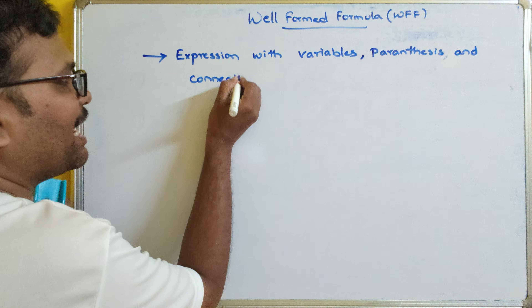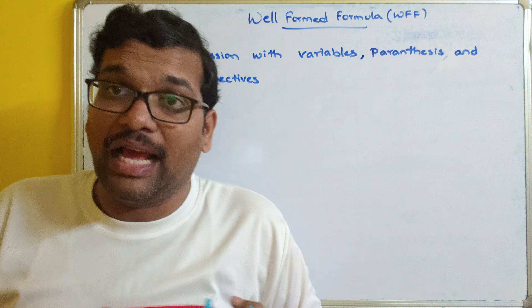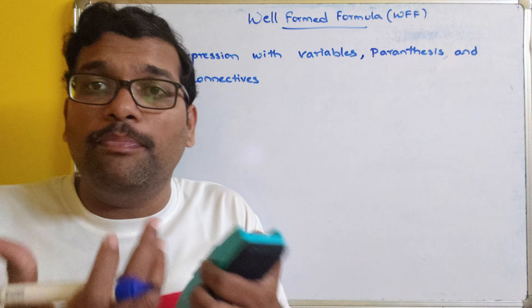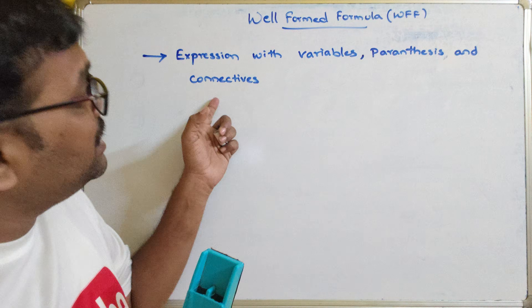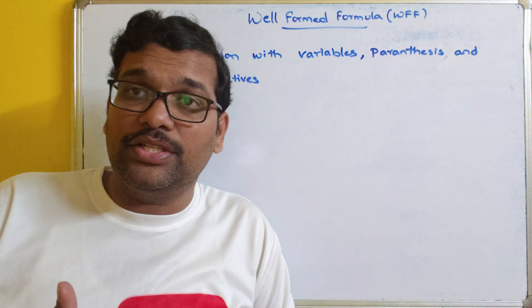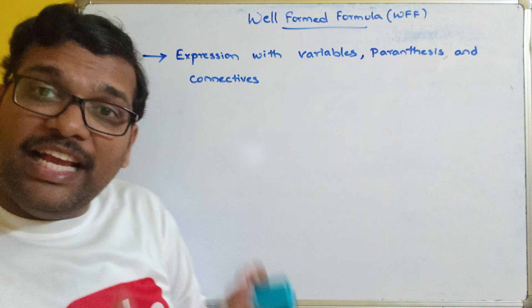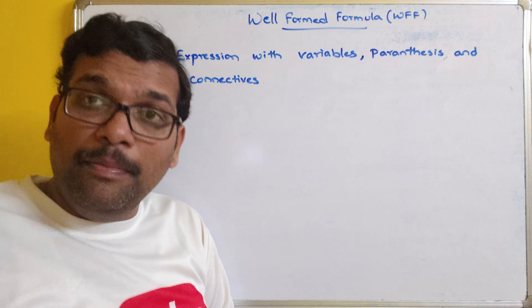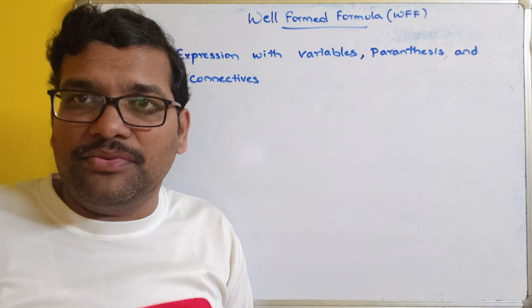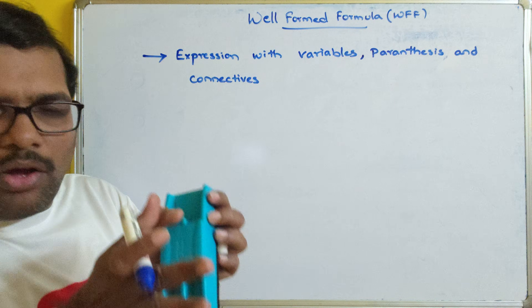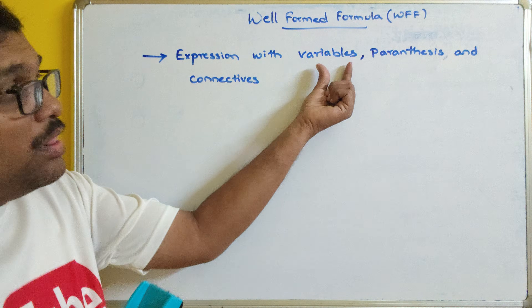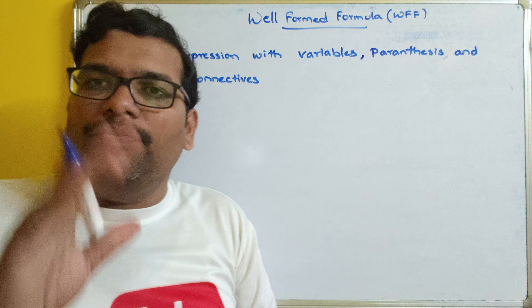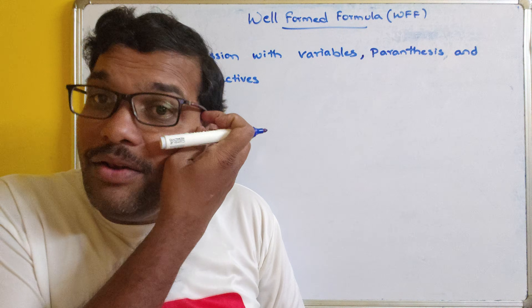We have seen different connectives. In order to form a compound or composite proposition, we are going to use connectives like conjunction, disjunction, negation, implies, double implies — all these are different connectives. So if any expression has all the variables, parentheses, as well as the connectives, we will be calling it a well-formed formula. For example, P implies Q — this is a well-formed formula because we have a connective and variables.